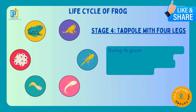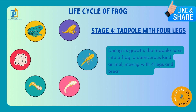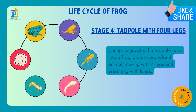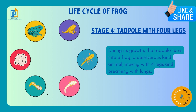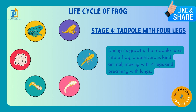Stage 4: Tadpole with four legs. During its growth, the tadpole turns into a frog — a carnivore land animal, moving with four legs and breathing with lungs. Jab tak yeh stage four tak pahunchta hai, toh tadpole itna bada ho chuka hota hai ki iski charo tangi aa jaati hain. Stage four mein almost poori tarha ka frog ban chuka hota hai.